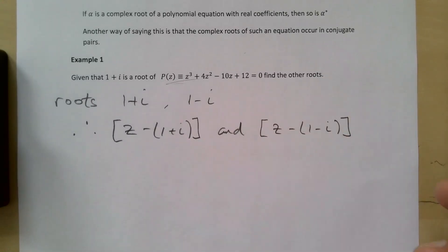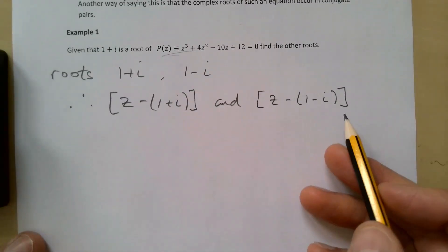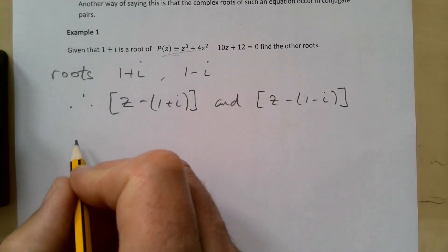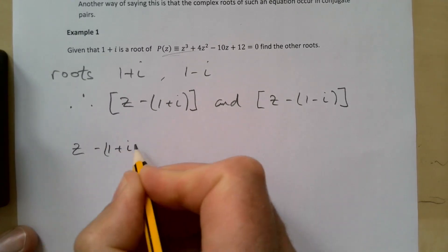We have two of our factors. If you multiply through your two factors you should end up with a quadratic, because these are two linear factors. So let's see what we have. We'll take our time with this because we need to be careful. If we have z-(1+i) and we're multiplying that by z-(1-i).